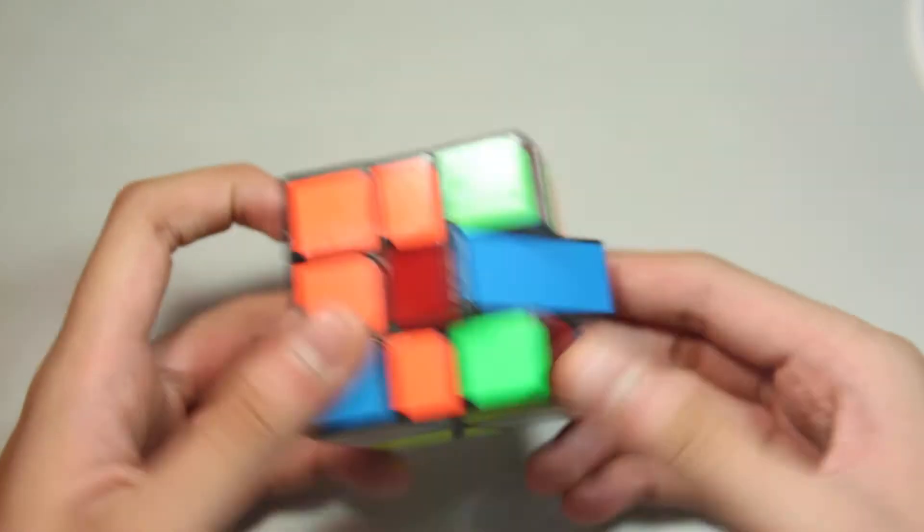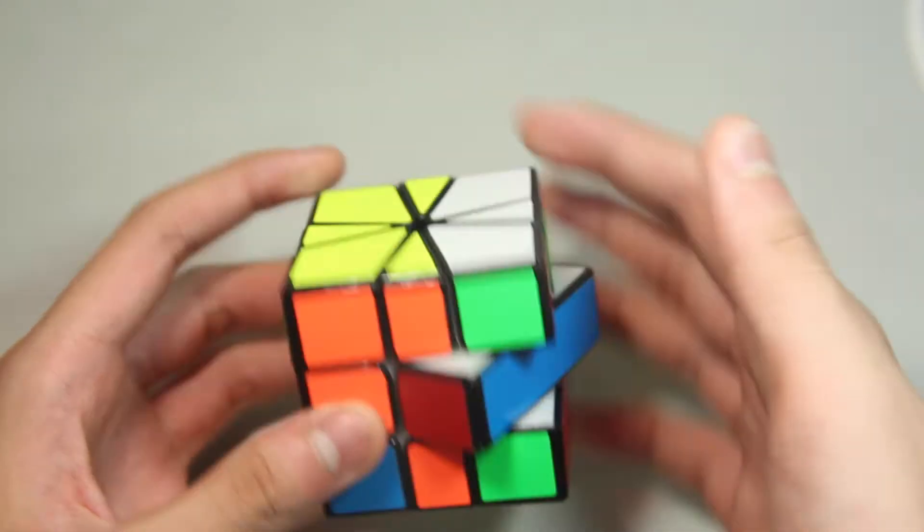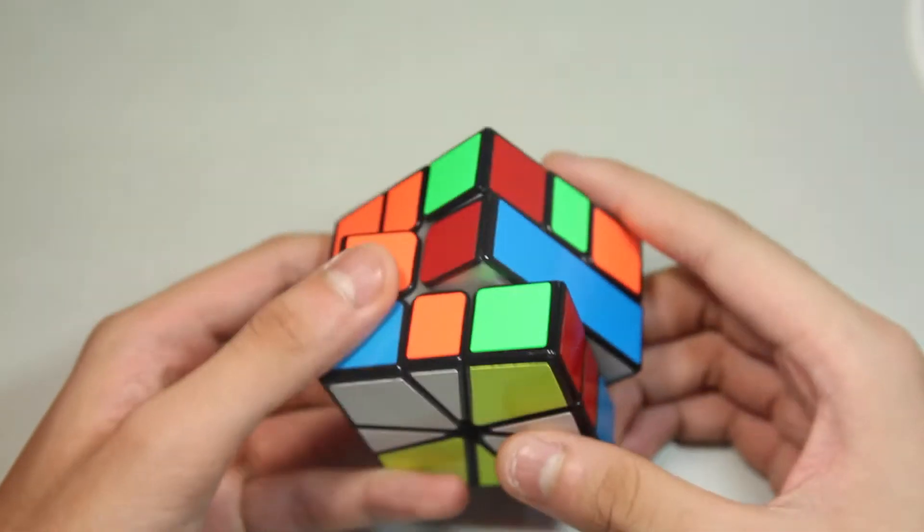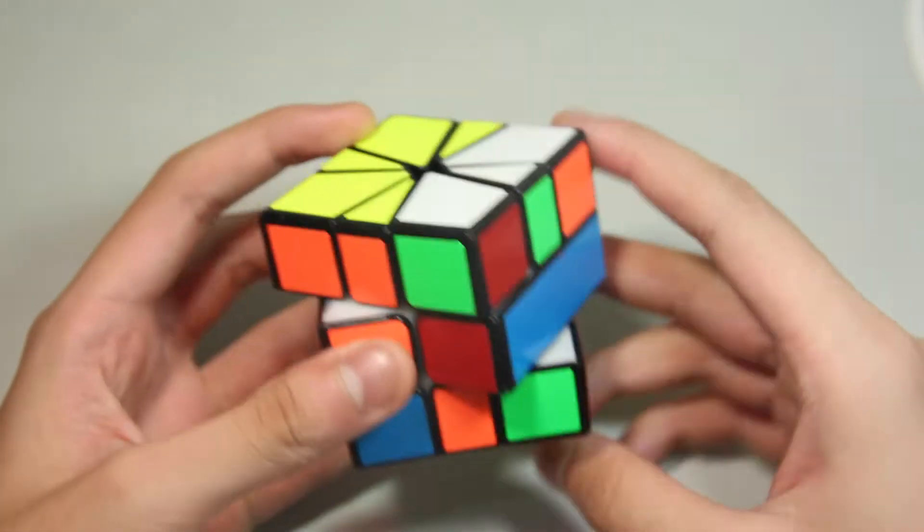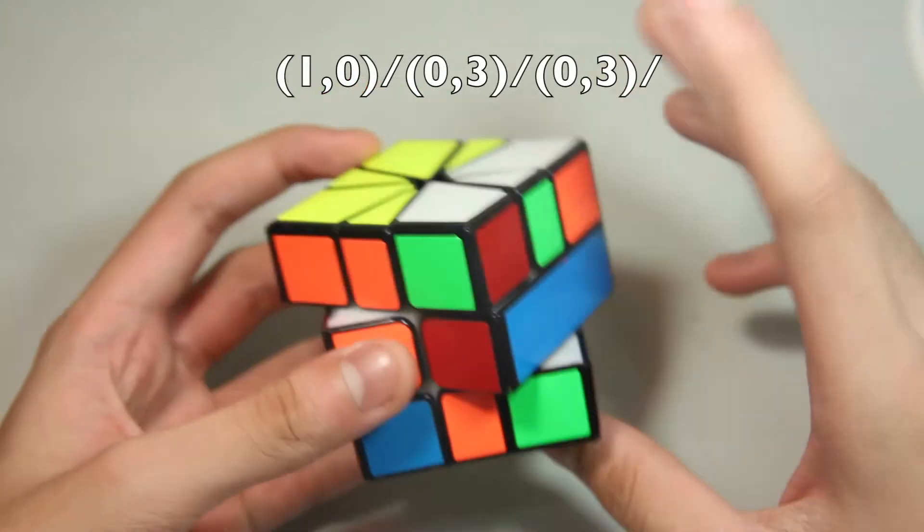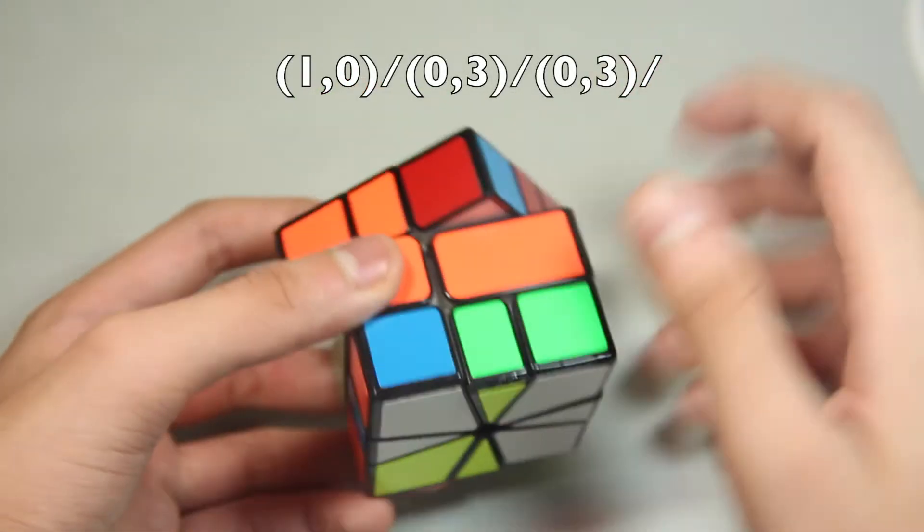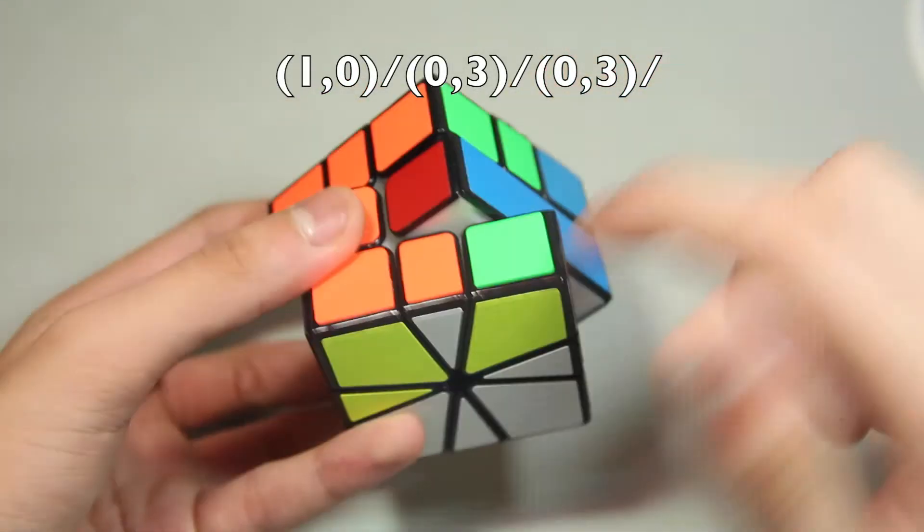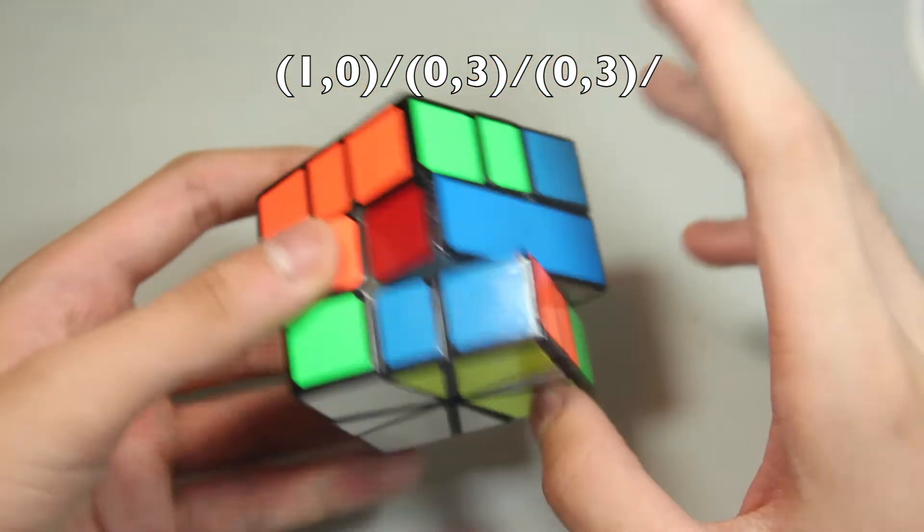Here's the next case. We have a bar on the top and a diagonal swap on the bottom. So what you want to do is just bring one corner up, move this corner aside, bring this corner back down, and we have two bars.